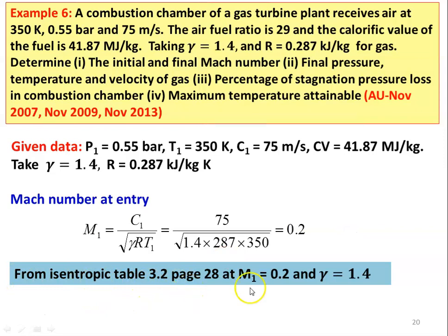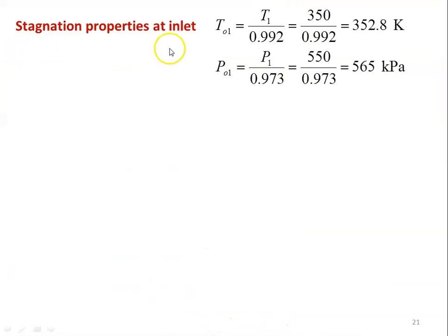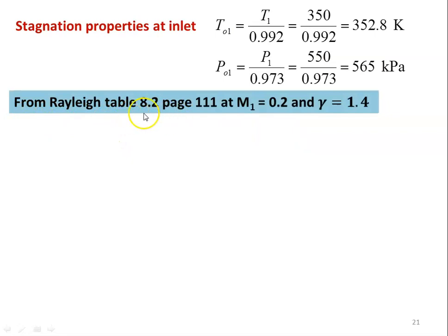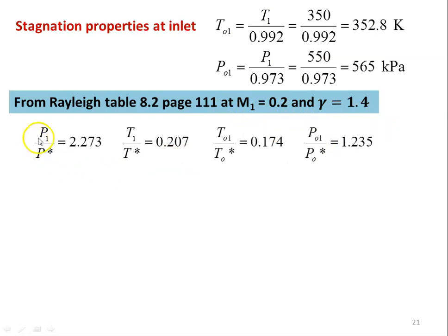From isentropic table at M1=0.2, gamma=1.4: T1/T01=0.992, P1/P01=0.973. Stagnation properties: T01=350/0.992=352.8 K, P01=550/0.973=565 kPa. From Rayleigh table 8.2, page 111, at M1=0.2, gamma=1.4: P1/P*=2.273, T1/T*=0.207, T01/T0*=0.174, P01/P0*=1.235.